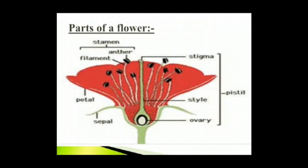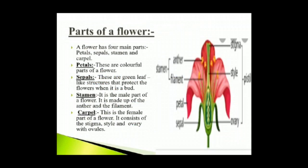Parts of a flower: You can see different parts of a flower in the picture. A flower has four main parts: petals, sepals, stamen and carpel. Petals are the colorful parts of a flower; they attract bees and butterflies with their bright color and pleasant smell. Sepals are green leaf-like structures that protect the flower when it is a bud and support the petals. Stamen is the male part of a flower, made up of the anther and the filament. The anther carries the pollen, which looks like yellow powder dust. Filaments are stalks that support the anther.